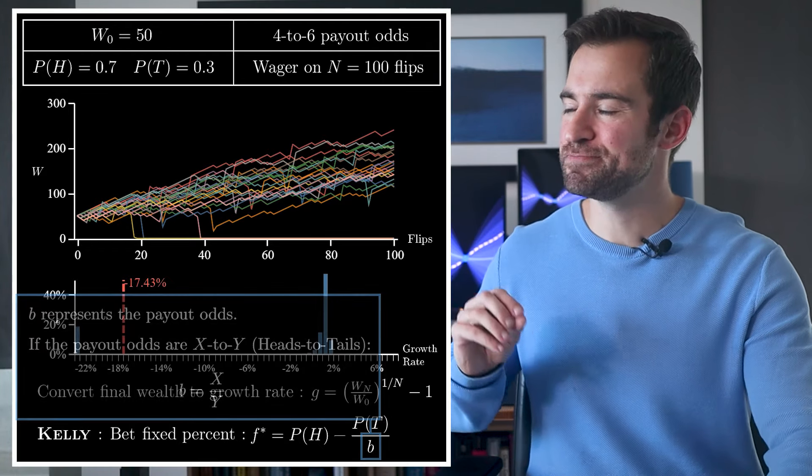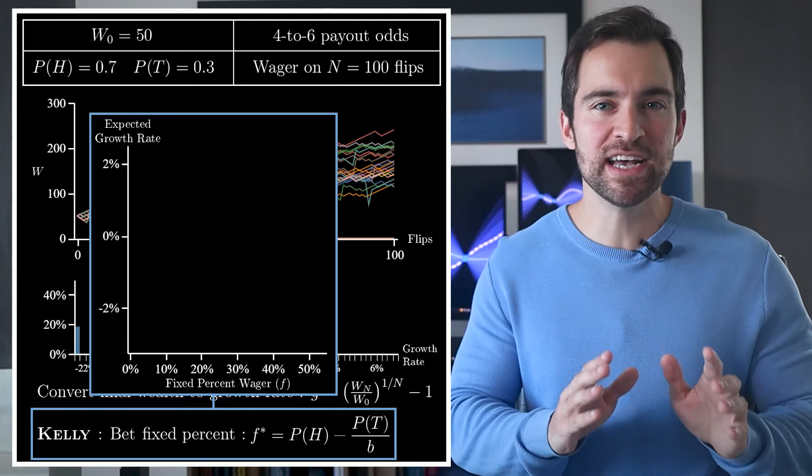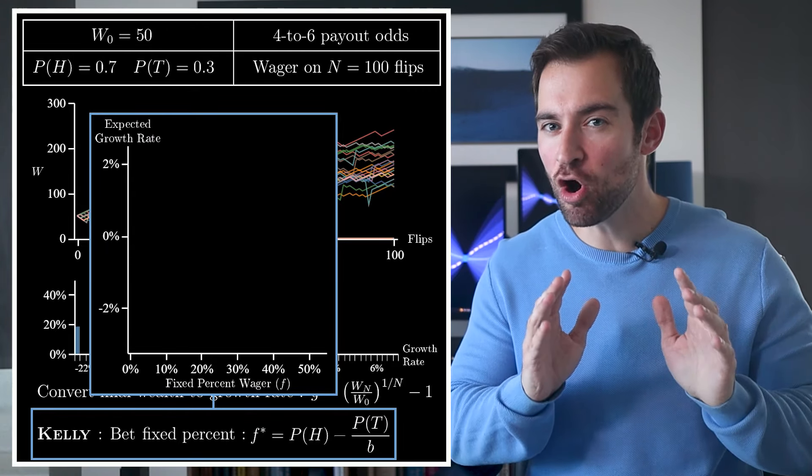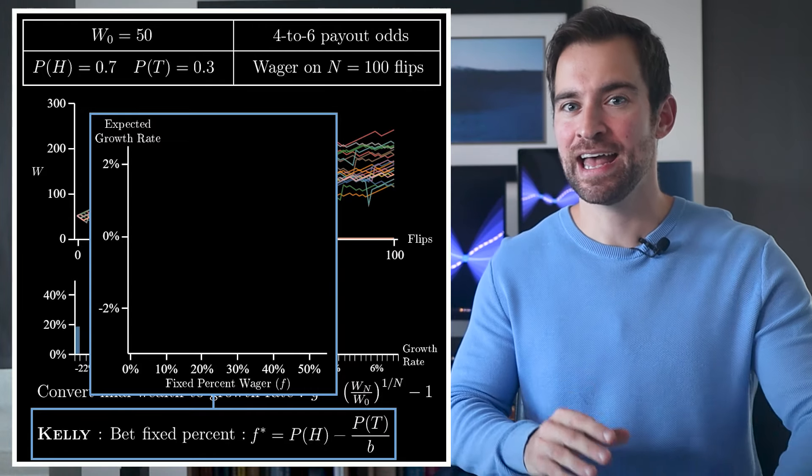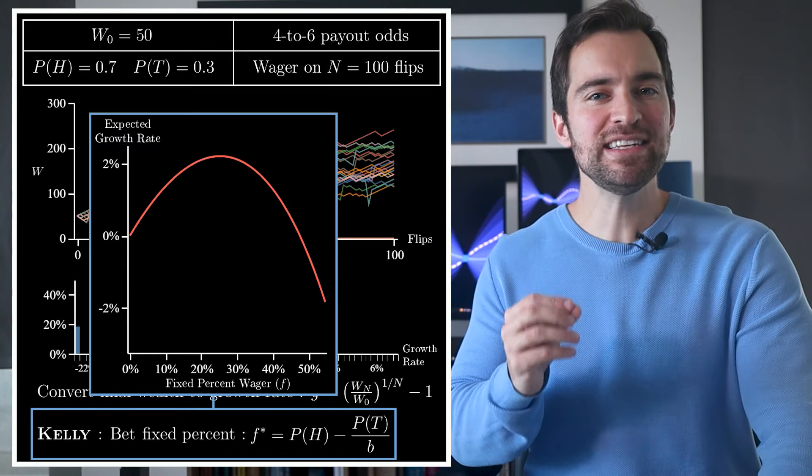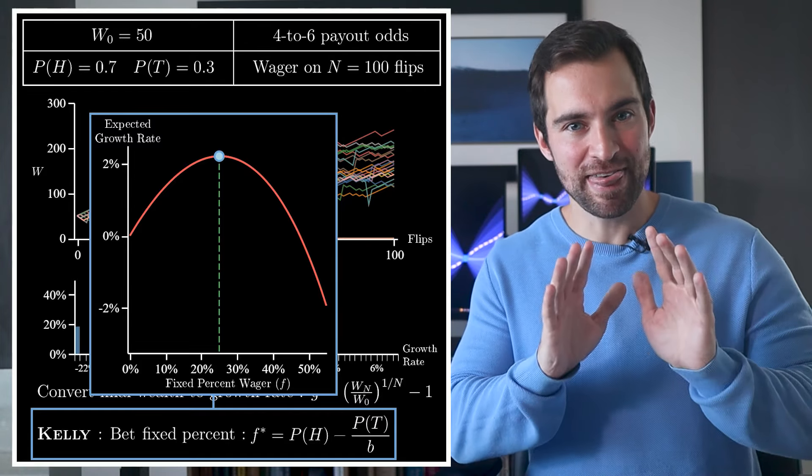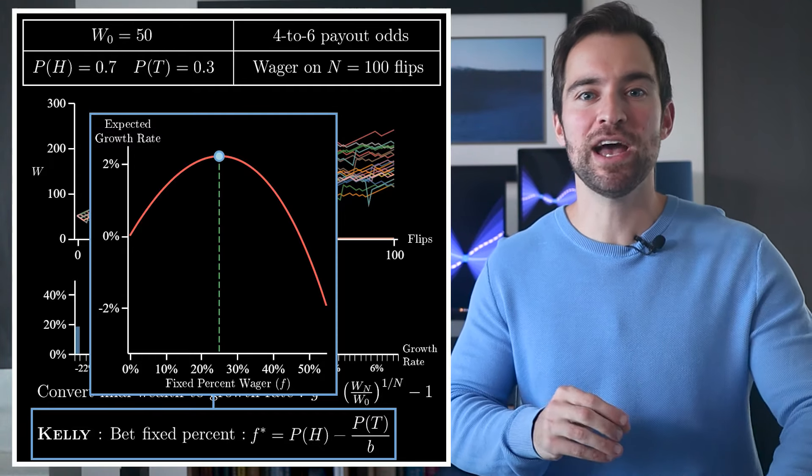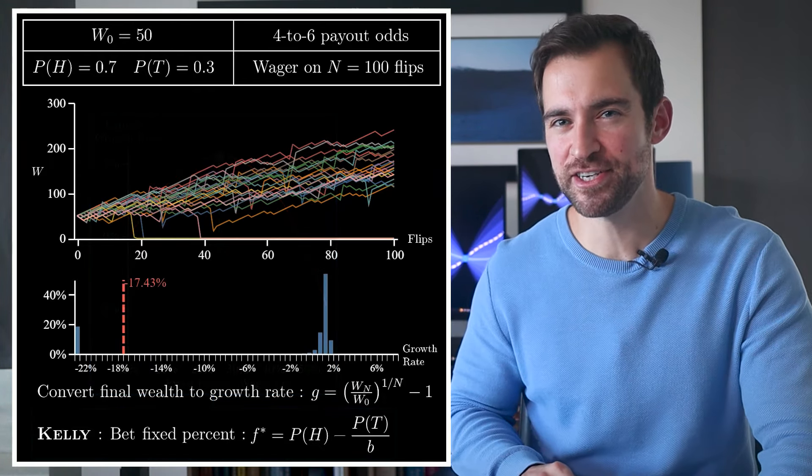To understand this, let's consider a plot. Along the horizontal axis, we have the percent of our current wealth that will wager on every flip. Kelly already told us that the best strategy can be found somewhere on this line. Now we can plot the expected growth rate for each percent. What Kelly tells us is the maximum for this function. So this is the best we can do. We use a constant percent wager and we have a formula for what that percent is.